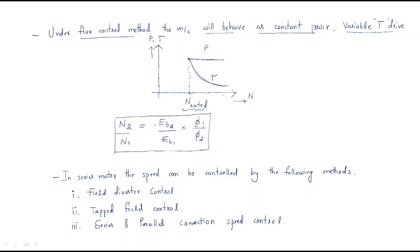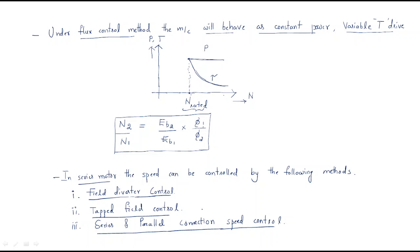In the last session we discussed about how to control the speed of the DC motor by using the flux or field. Now we have different types of speed control methods. In this session, particularly for the series motor, the speed can be controlled by the following methods: field diverter control, tapped field control, and series and parallel connection of speed control. These are especially designed for the series motor.